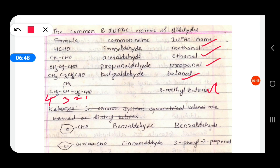For aromatic compounds, when a benzene ring has a CHO aldehyde group attached, the IUPAC and common names are almost the same because aromatic aldehydes are popular by their common names. From benzene, replacing '-e' with '-aldehyde' gives benzaldehyde — the IUPAC name is also benzaldehyde. When benzene is attached to CH=CH-CHO (three carbons with a double bond at carbon 2), it becomes 3-phenyl-2-propenal in IUPAC.